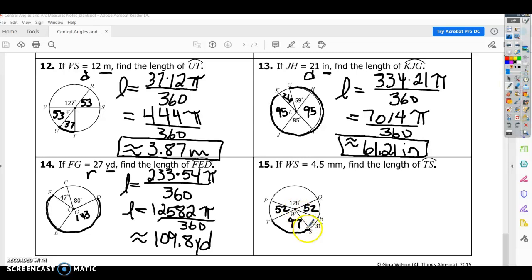Working on the last one here. If WS, W is the center. So that's my radius. Find the length of TS. So I went ahead and filled in these parts as well. Again, this is a semicircle. So you know that this equals 180. So 180 minus 128 gives you the 52. These two cords intersect at the center. So those have to be the same. This was given. So you know that all of these have to add up to 360. So you can find the 97 that way.